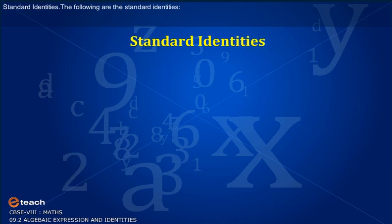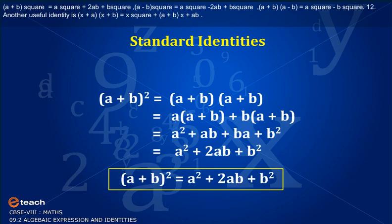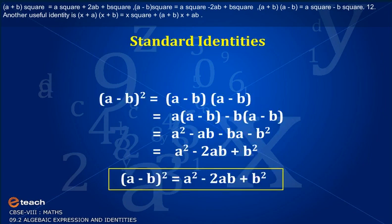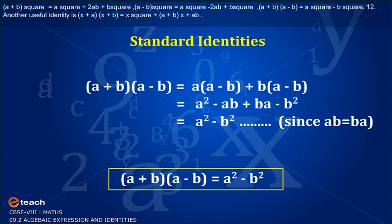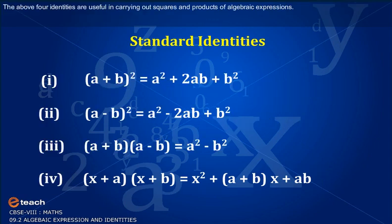Standard Identities. The following are the standard identities: (A plus B) squared equals A squared plus 2AB plus B squared. (A minus B) squared equals A squared minus 2AB plus B squared. (A plus B) into (A minus B) equals A squared minus B squared. Another useful identity is (x plus a) into (x plus b) equals x squared plus (a plus b) times x plus ab. These four identities are useful in carrying out squares and products of algebraic expressions.